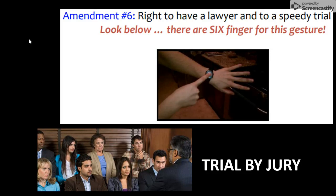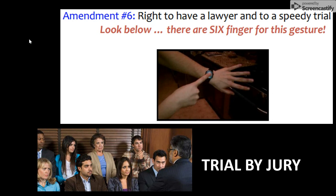The Sixth Amendment — you're going to point to your watch on your wrist. This reminds us that all people have the right to a quick and speedy trial by jury. If you are accused of a crime, you don't want to sit in jail for four years before somebody listens to your case. A trial by jury means a group of peers — people similar to you — listen to your story and decide if you're innocent or guilty. Also with the Sixth Amendment, you have the right to a lawyer; if you can't afford one, the government will provide you one. This is all in regards to criminal cases.